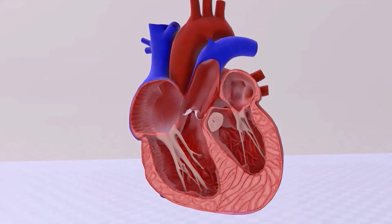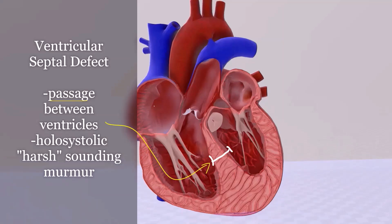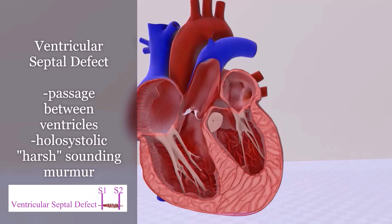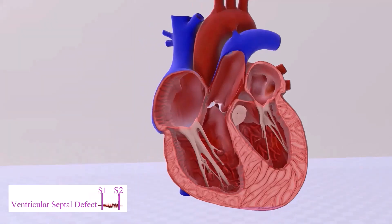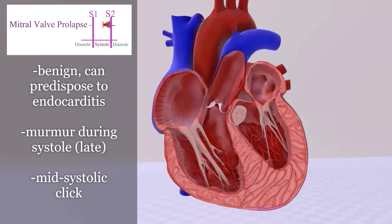Tricuspid regurgitation is often due to right ventricular dilatation, and either valve can be affected by infective endocarditis. Ventricular septal defect creates a passageway between the ventricles, producing a holosystolic harsh murmur. Mitral valve prolapse is common and usually benign but can predispose to infective endocarditis. It produces a late crescendo murmur with a mid-systolic click — due to sudden tensing of the chordae tendineae — heard best at the apex, loudest just before S2.